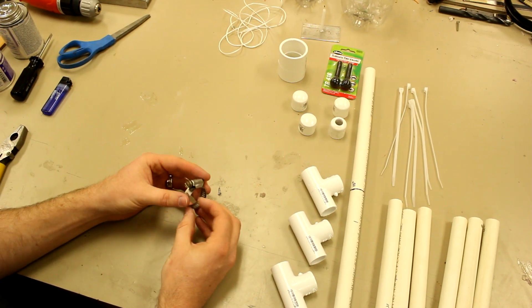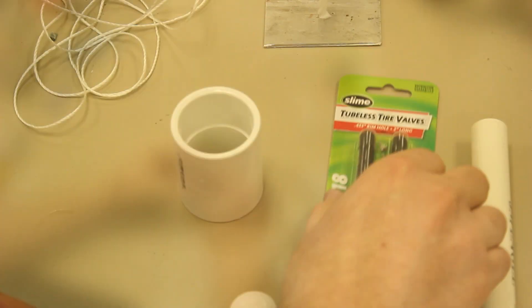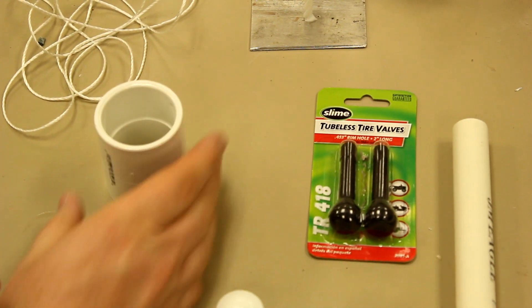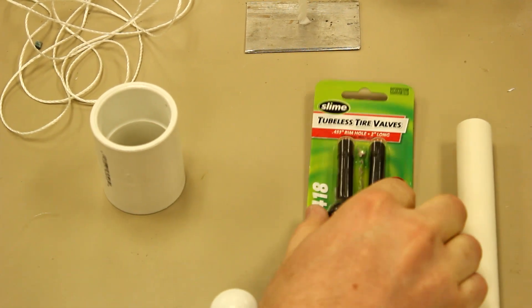You'll need a three quarter inch band clamp. And then this special item may be harder to find. You can get it at any automotive store. It's called a tubeless tire valve.